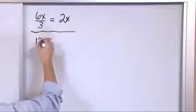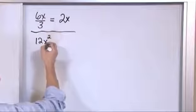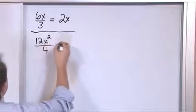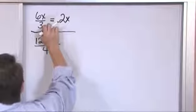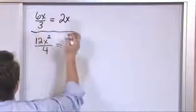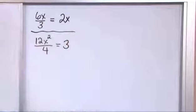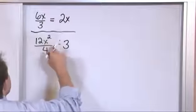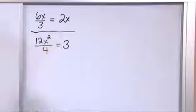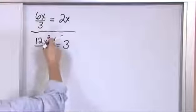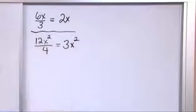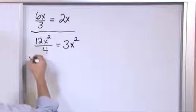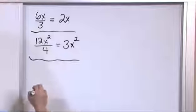What if you have 12x squared divided by 4? Do the same thing: pretend there's no x and look at 12 over 4 — twelve divided by 4 is 3. Then look at the x squared. There are no x's in the bottom to cancel with, so x squared on top just continues to go along for the ride. The answer is 3x squared.